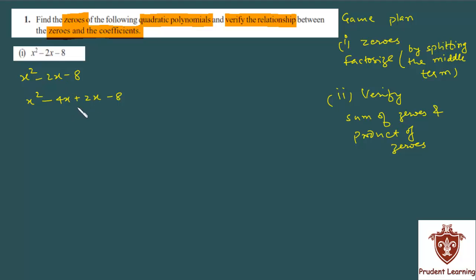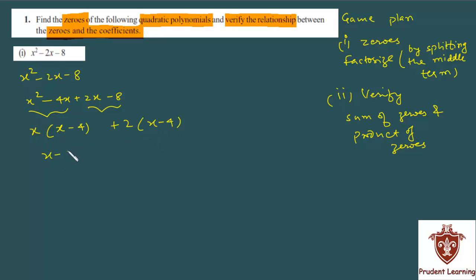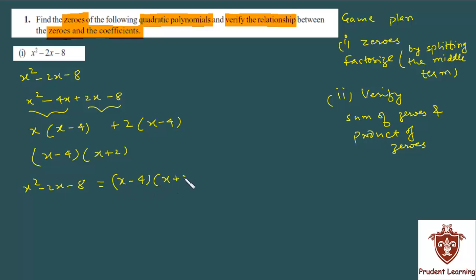Humne middle term ko split kar diya. Now from the first two terms we can get x as common: x(x − 4). From the last two terms we can get 2 as common: 2(x − 4). Now from these two terms, x − 4 is common. Taking x − 4 as common we get (x − 4)(x + 2), which means x² − 2x − 8 equals (x − 4)(x + 2).